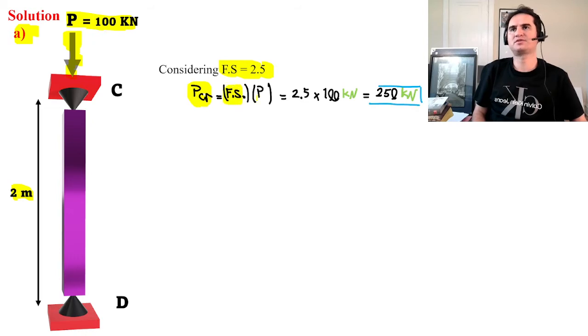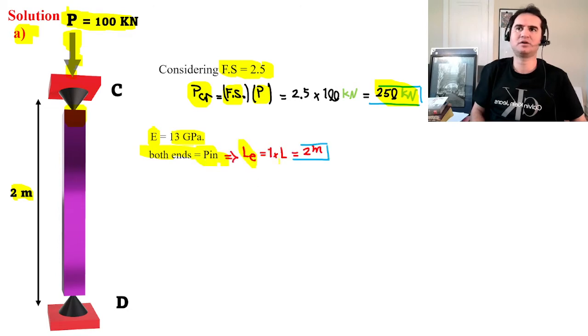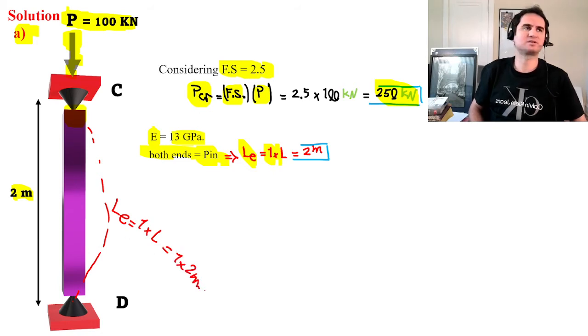P_critical is factor of safety times the force. We want to design the cross-sectional area of our column, so we can consider the applied P as the critical P and multiply that by factor of safety to have the critical load. E is 13 gigapascals and both ends are pin, which gives us an effective length of just 1 times L. If we have a pin at both ends, that's 1 times L, so that's 1 times 2 meters—that's the effective length for a two-pin scenario.